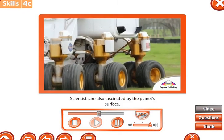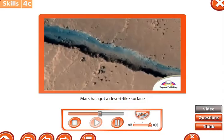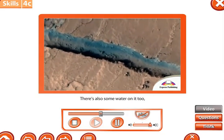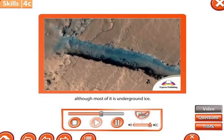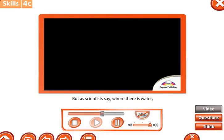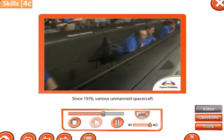So it wouldn't be your ideal summer holiday destination. Scientists are also fascinated by the planet's surface. Mars has got a desert-like surface that looks like parts of Earth. There's also some water on it too, although most of it is underground ice. But as scientists say, where there is water, there could be life.